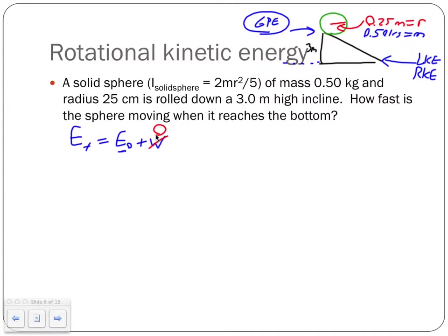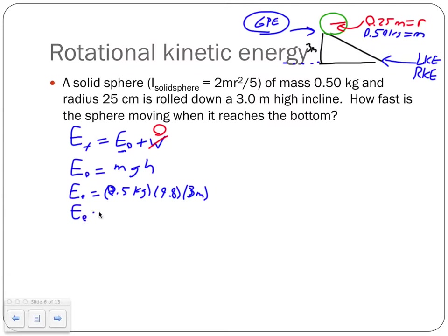Original energy is gravitational potential energy: mgh = 0.50 × 9.8 × 3.0 = 14.7 joules. Final energy is linear kinetic energy plus rotational kinetic energy: ½mv² + ½Iω².